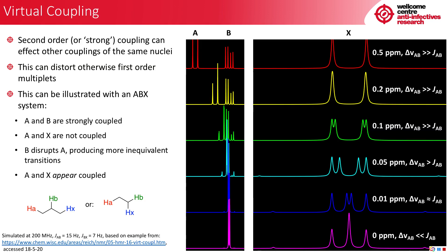So the last of these phenomena that I wanted to talk about is something called virtual coupling. So second order or strong coupling can actually affect the other couplings of the nuclei involved. So that strong coupling can then distort otherwise first order multiplets. And I think I can show you this with an ABX system. So A and B will start coupled and become strongly so as their signals converge. A and X are further apart and are not coupled. And as B disrupts A, it produces more inequivalent transitions and makes the signal more complicated. But I think it's easier to show you this with an illustration.